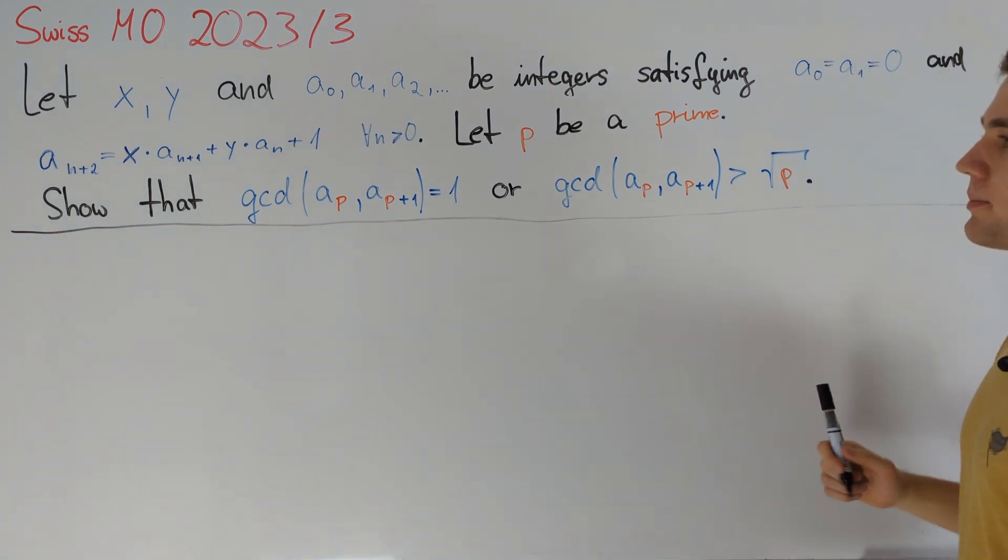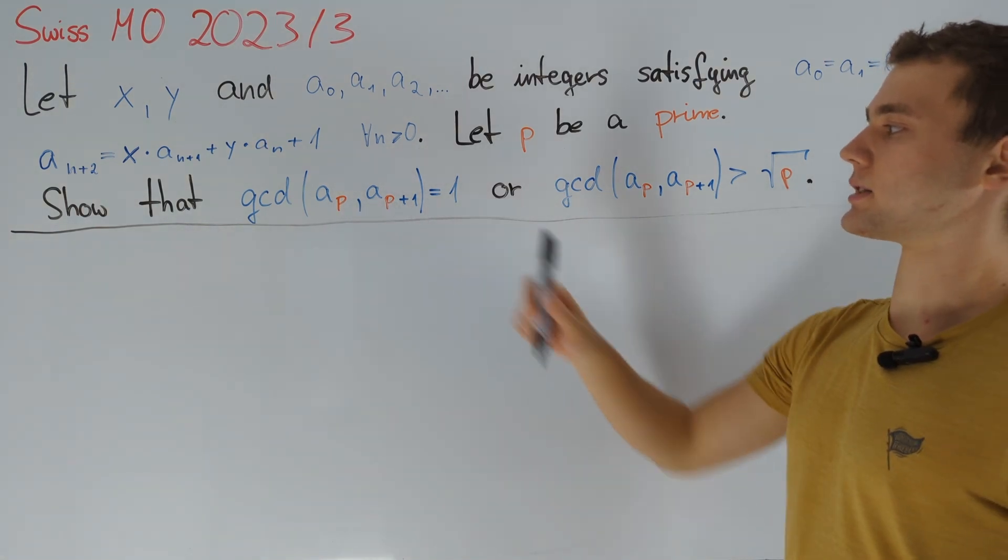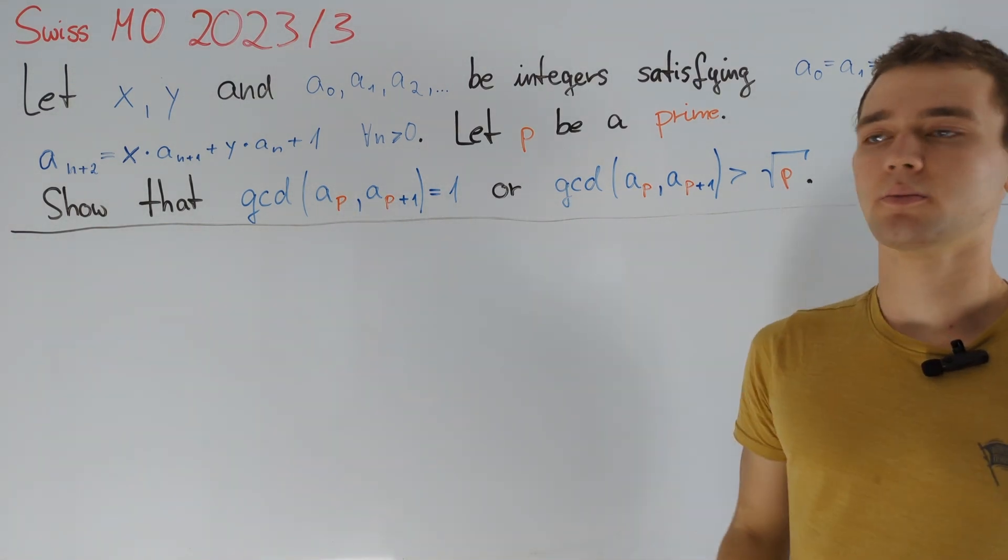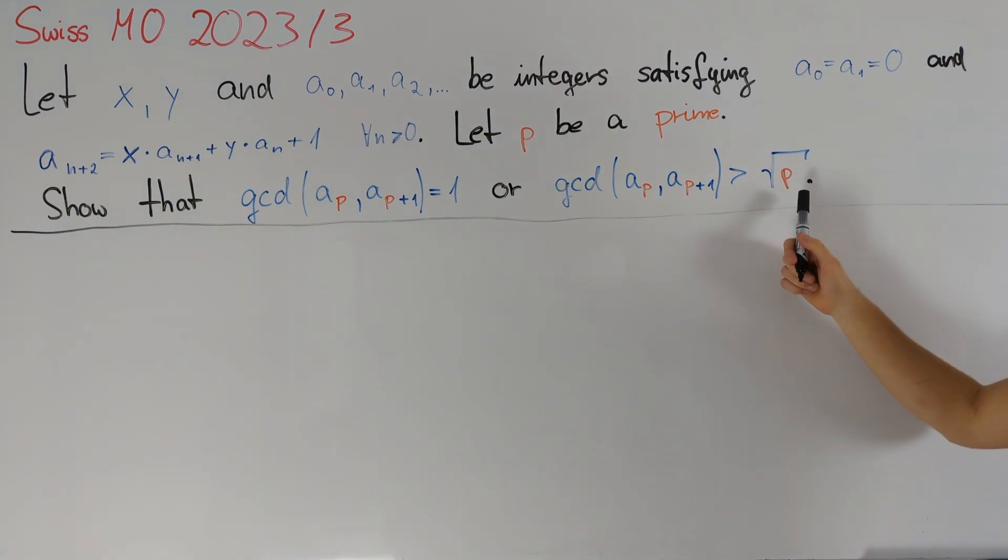Now we consider a prime p and are asked to show that the greatest common divisor of aₚ and aₚ₊₁ is either equal to 1 or larger than the square root of p.